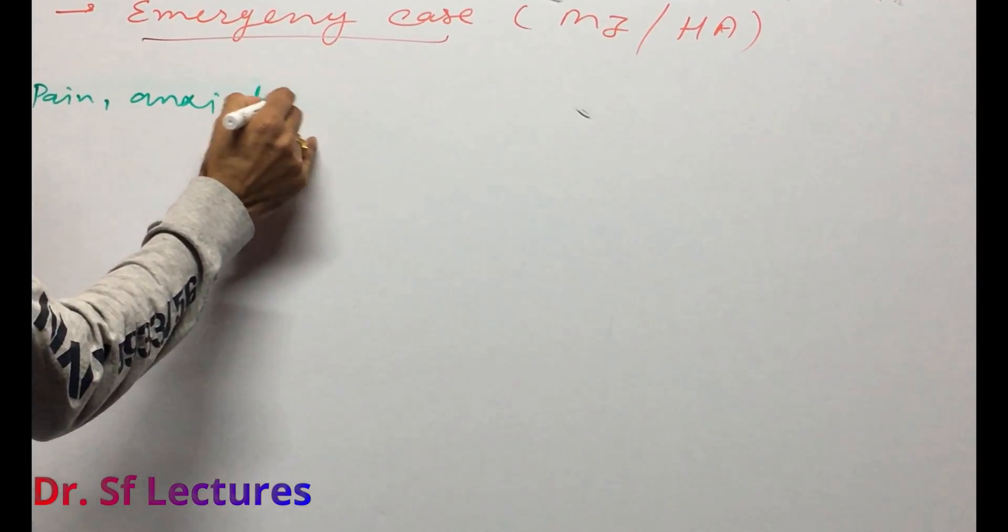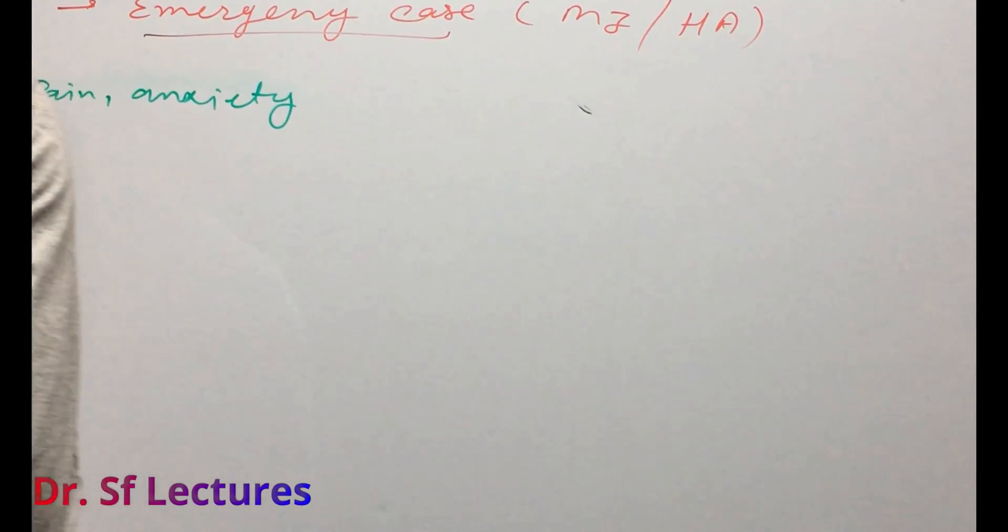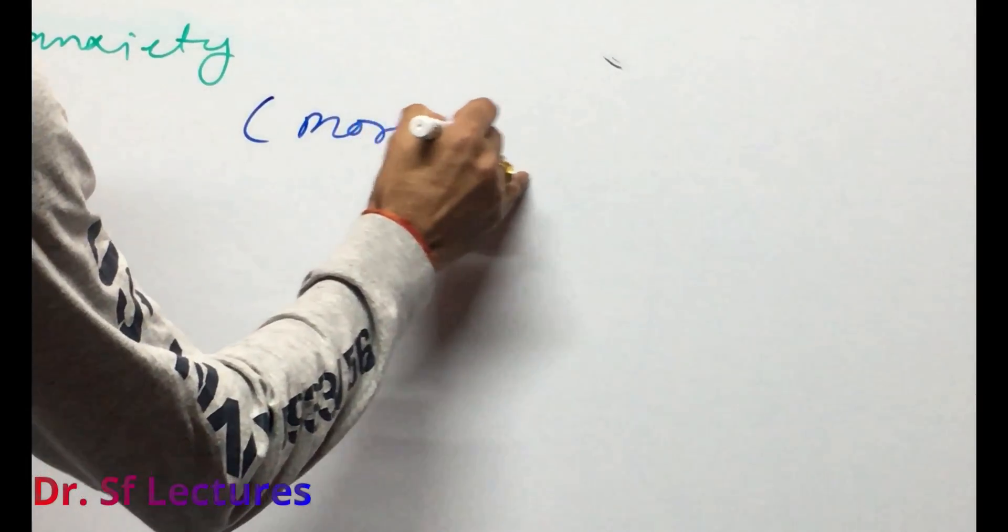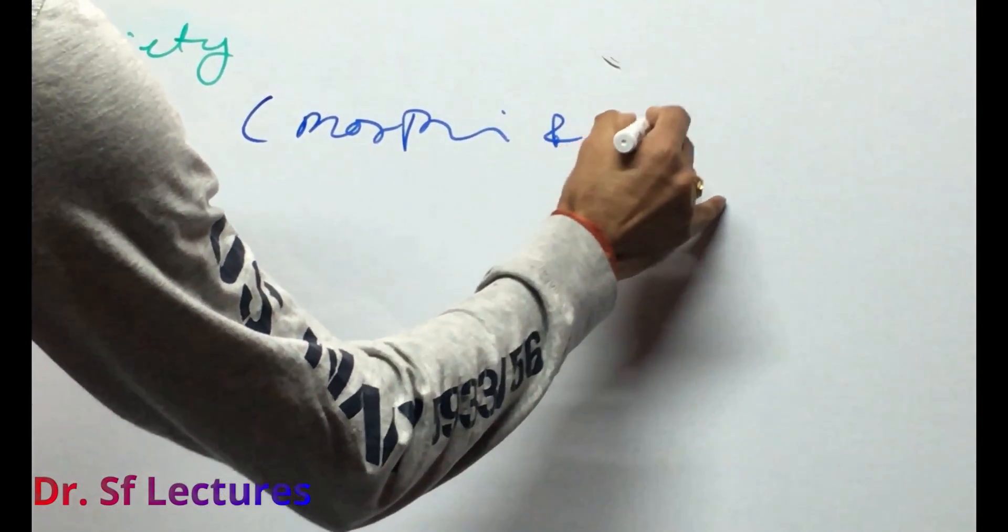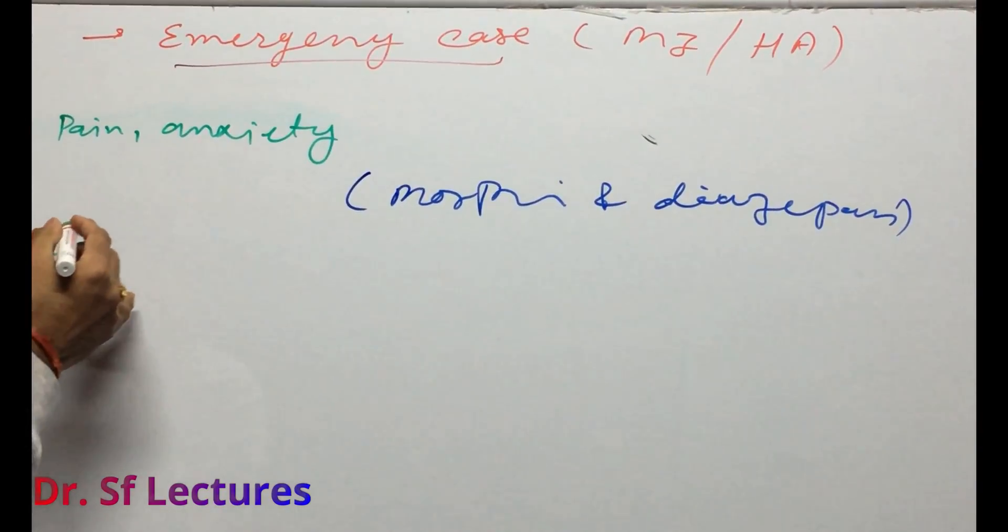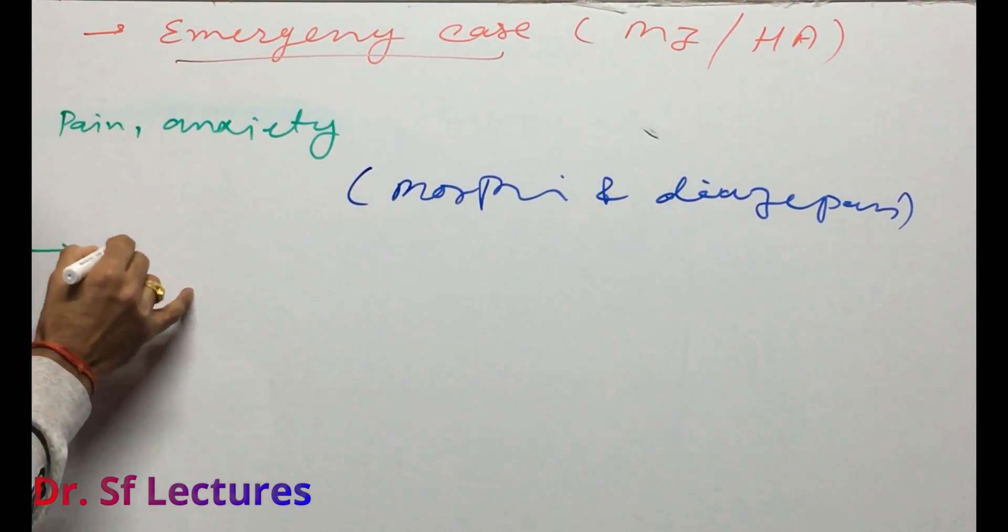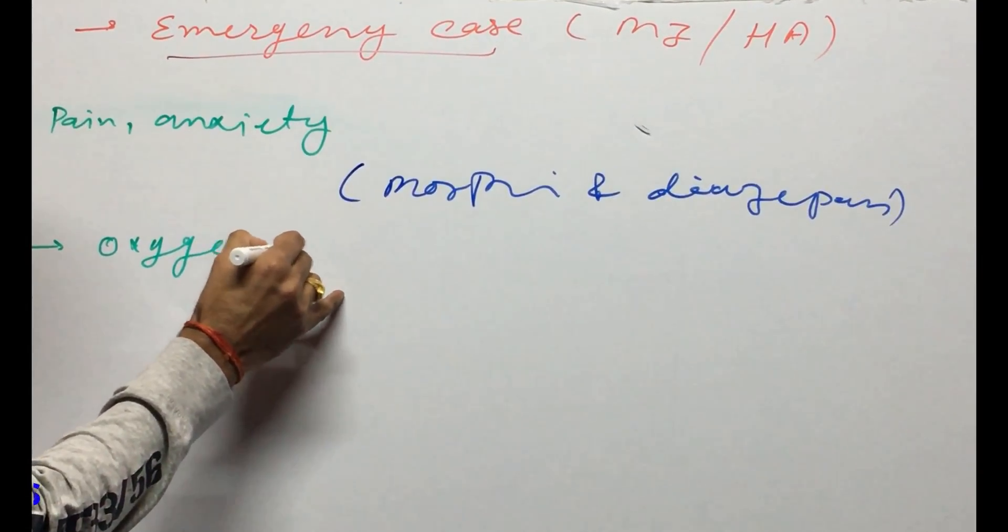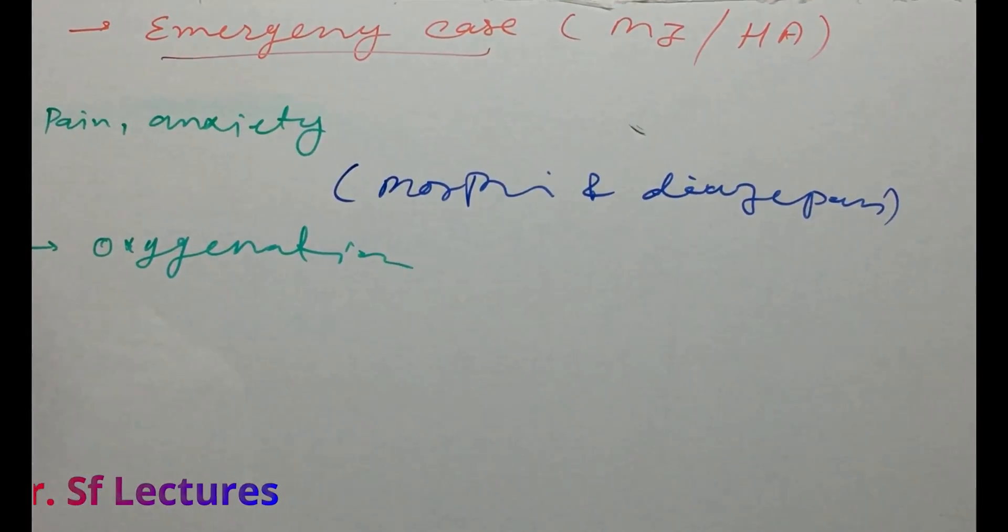First is pain and anxiety. If patient is taking non-steroidal anti-inflammatory drugs and patient is not feeling well, we can use morphine and diazepam. Patient is in emergency situation so we have to give oxygenation therapy. We will give oxygen through the inhalation process.